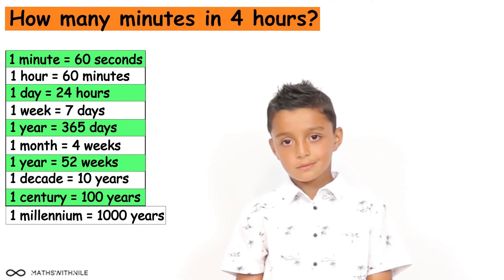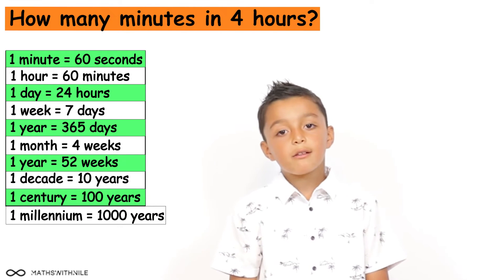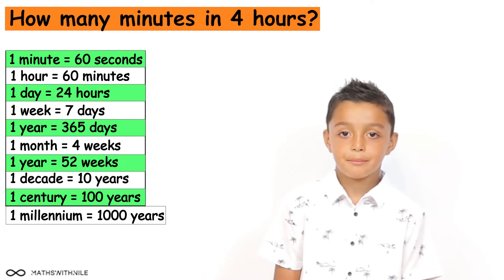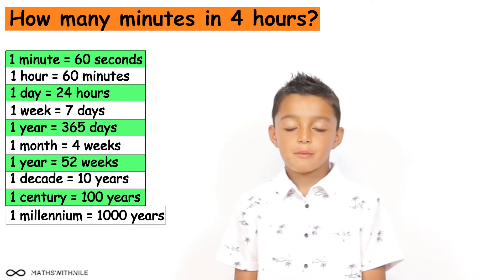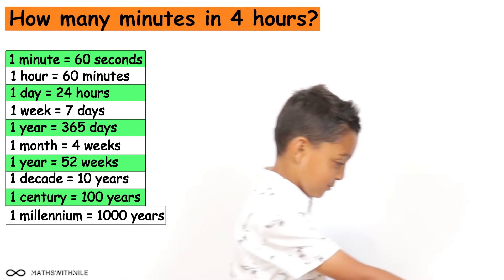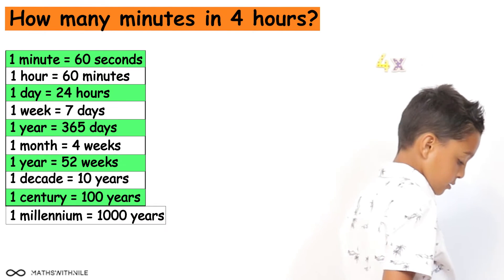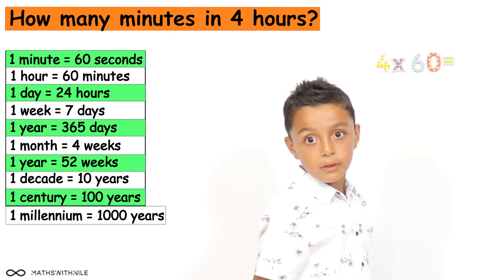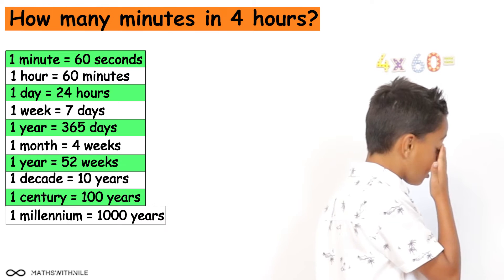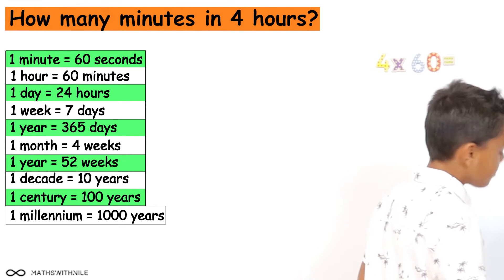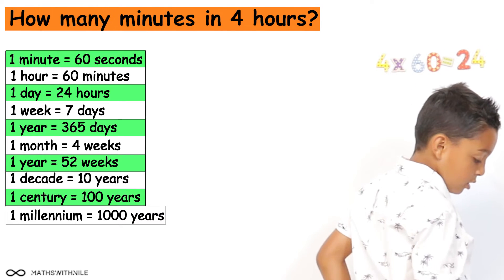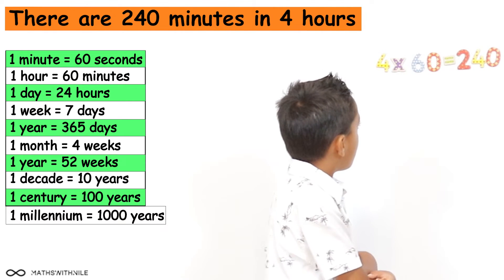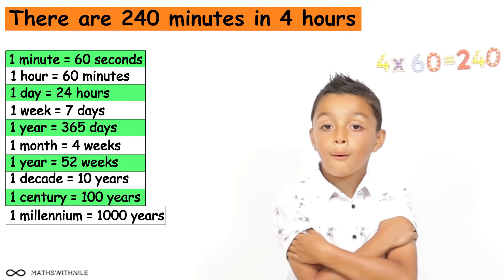How many minutes are there in four hours? We know there are 60 minutes in one hour, so we need to double 60 and double it again — which is really timesing 60 by four. Four times six: double six is twelve, and double twelve is twenty-four. So we put down twenty-four and add a zero. Four times sixty equals two hundred and forty. There are two hundred and forty minutes in four hours. Excellent, Niall.